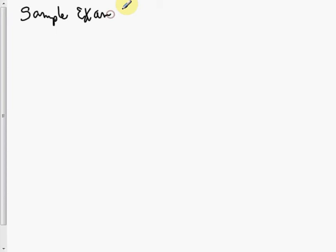Sample Exam 1, number 1. Solve the differential equation by separation of variables. We have the expression y minus yx squared, dy over dx, is equal to y plus 1 squared.